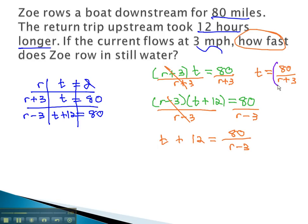We can now replace the time with the 80 over r plus 3 to get our final equation to solve: 80 over r plus 3 plus 12 equals 80 over r minus 3. In part 2 of this video, we'll come back to this rational equation and solve it to find how fast Zoe is rowing in still water.